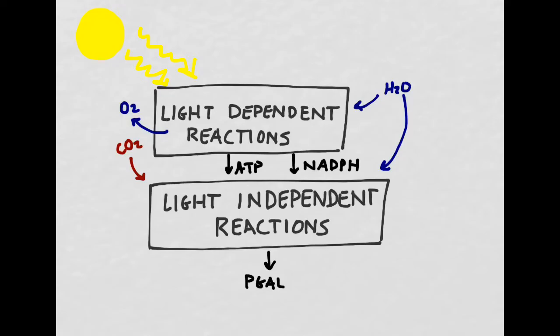If we zoom in even more on photosynthesis, we'll recall that there are two separate components: the light-dependent reactions and the light-independent reactions. The light-dependent reactions are triggered by photons of light released from the sun, whereas the light-independent reactions are not triggered by photons of light.